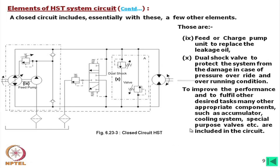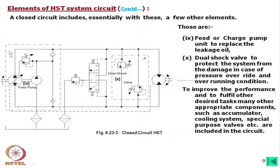To improve performance and fulfill other desired tasks, many additional components such as accumulators, cooling systems, and special purpose valves can be included in the circuit. For less pressure fluctuation, accumulators can be added on both high and low pressure sides with bypass circuits. For servo control valves that require oil filtered to 5 microns or finer, a high pressure inline filter is used. All such components can be added to make the circuit more efficient and workable.